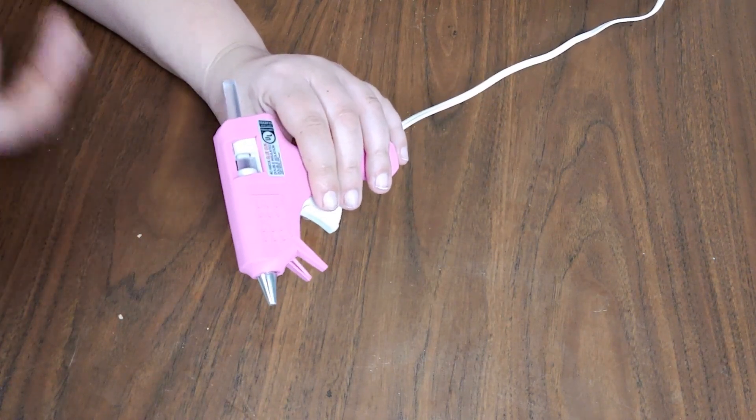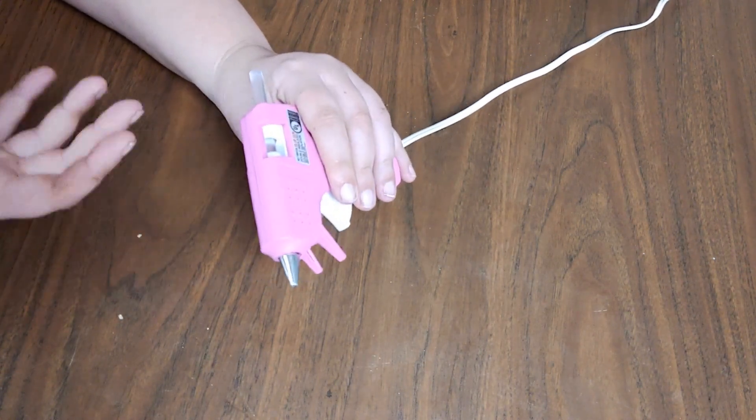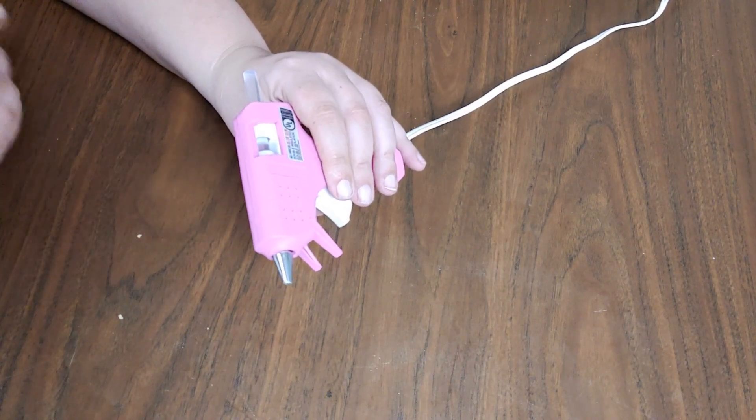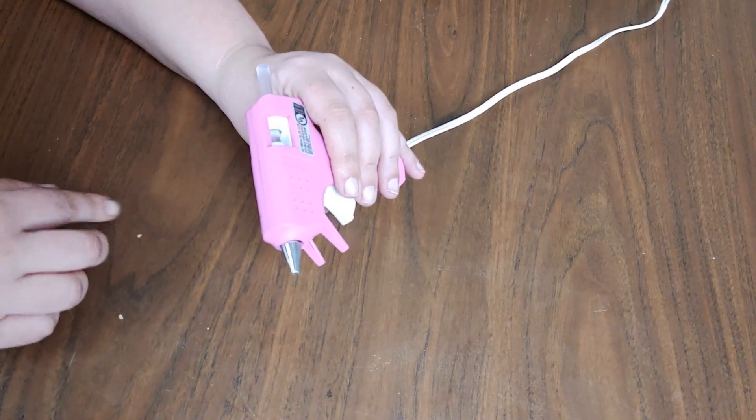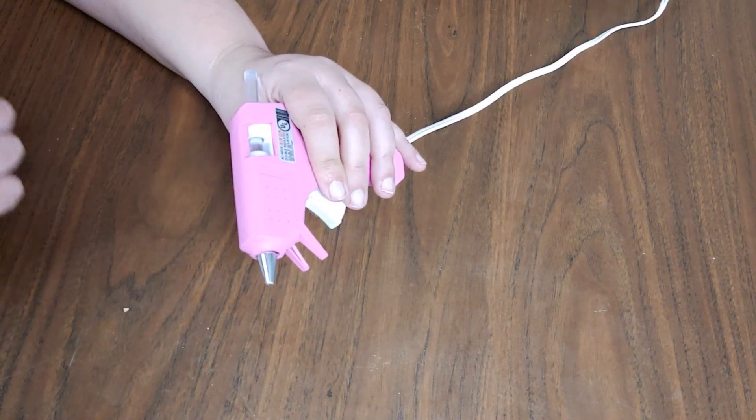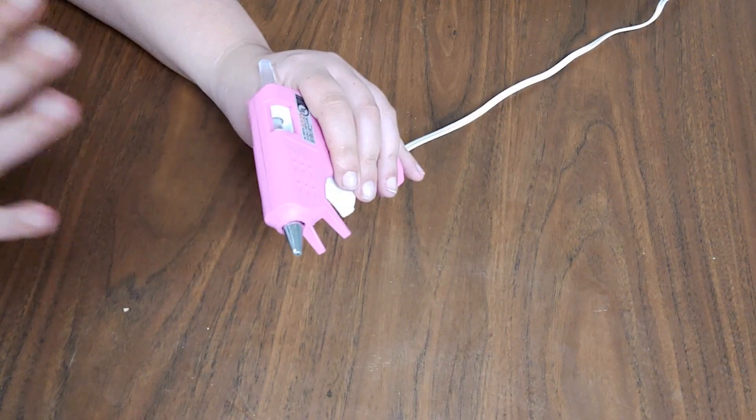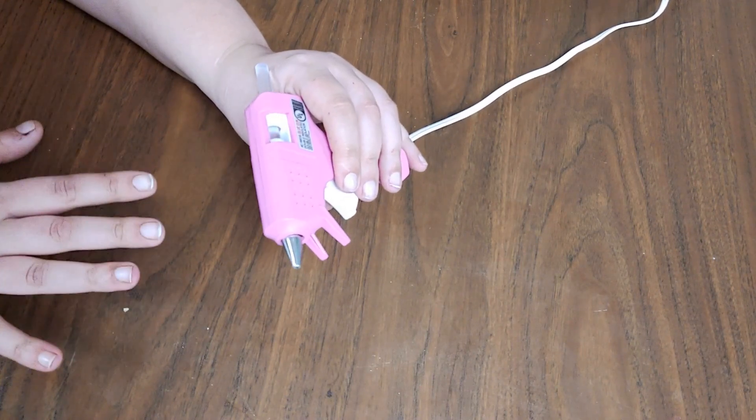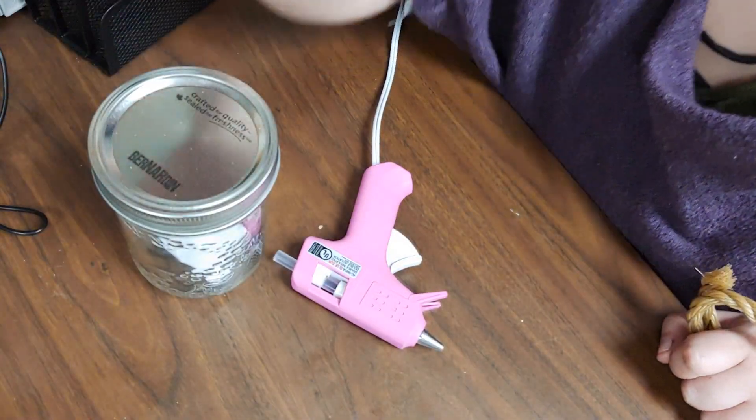But you can do it with any glue, it just might take a little more patience. You might also have to let your layers dry before you continue wrapping. So if you got a glue gun, let it warm up and I'll meet you at the next step.